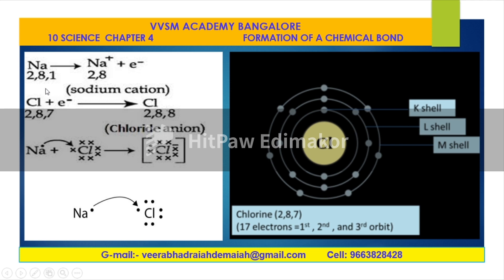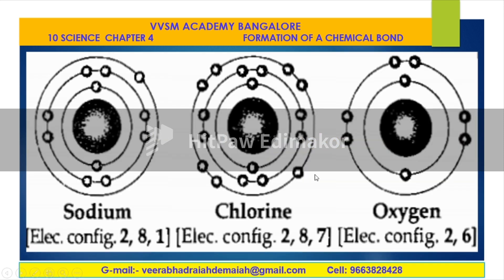The representation shows 2.8.1 — sodium loses its electron to form a sodium cation, and the chloride ion becomes the anion, showing the transference of electrons from sodium to chlorine. Similarly, sodium also combines with oxygen atom, forming sodium oxide. When sodium burns in oxygen, it gives sodium peroxide. So sodium combines with chlorine gas as well as with oxygen, and hence the respective compounds are formed.